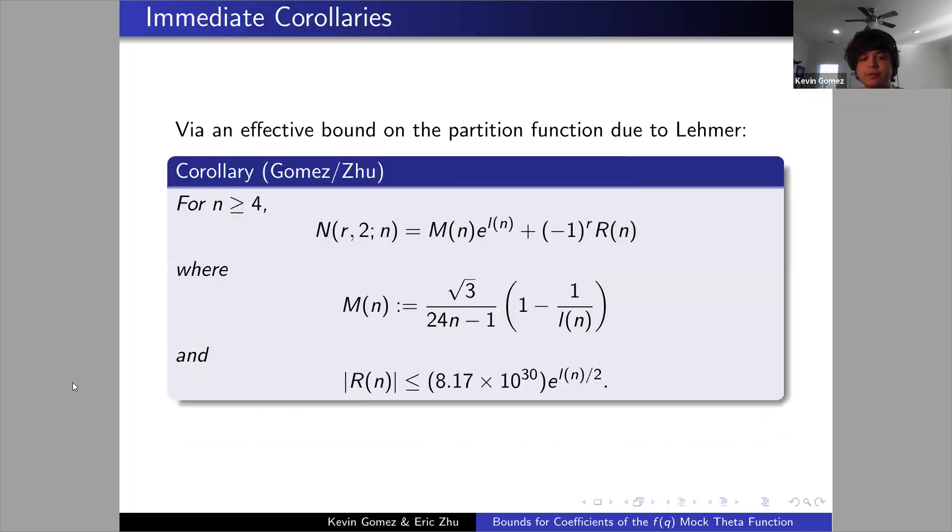The first is a simple application to getting growth rates for N_r(2,n). If we have a nice main term growth rate here, then we can effectively bound our error term. This is originally due to an effective bound on the partition function that was done by Lehmer, and combining it, we're able to obtain nice asymptotics for the rank counting function.